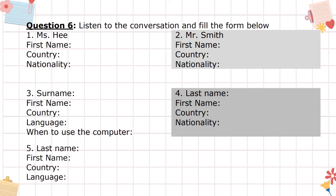Four. Good afternoon. Can I help you? Yes, I'd like to enrol for the course. Certainly. What's your last name? Beattie. Could you spell that for me? Yes, it's B-E-A-T-T-Y. Thanks, Mr. Beattie. And what's your first name? Emilio — that's spelled E-M-I-L-I-O. Where are you from, Mr. Beattie? Italy. So you are Italian? Yes, that's right.